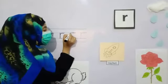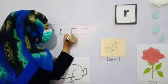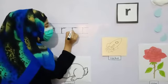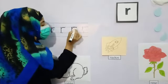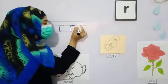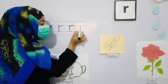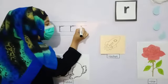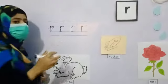Start from the point. Go down, down, down. Go up. Go round. Start from the point. Go down, down, down. Don't pick the pencil. Then go up. Go round.